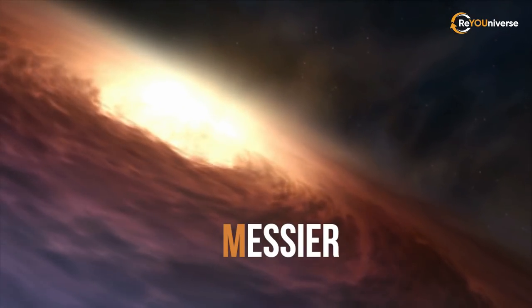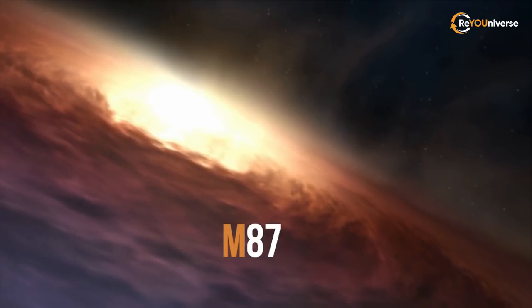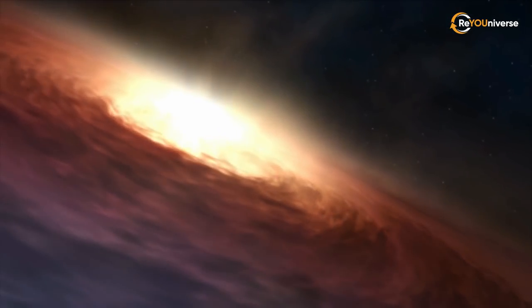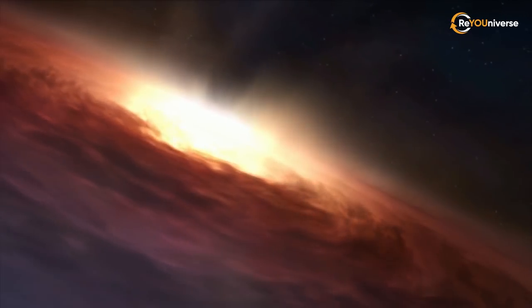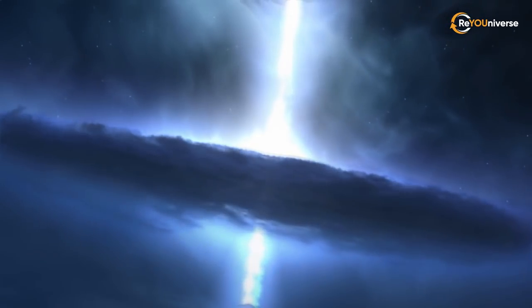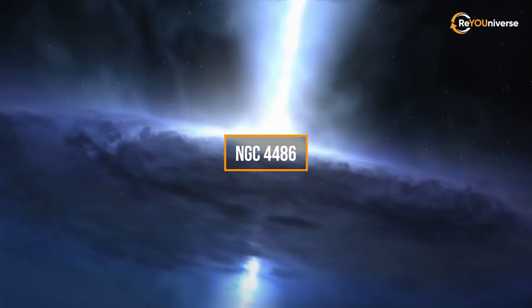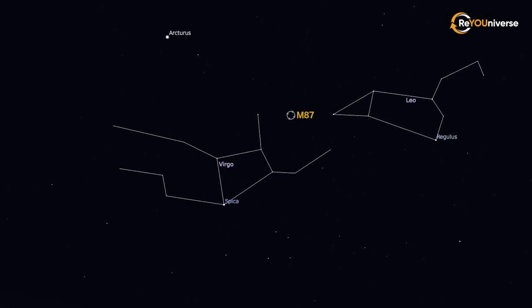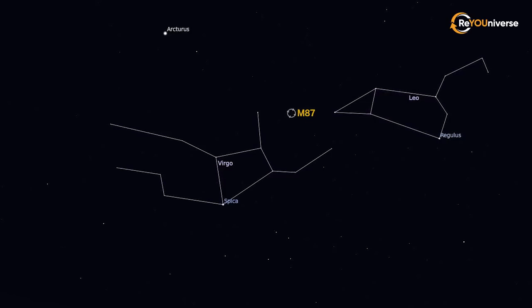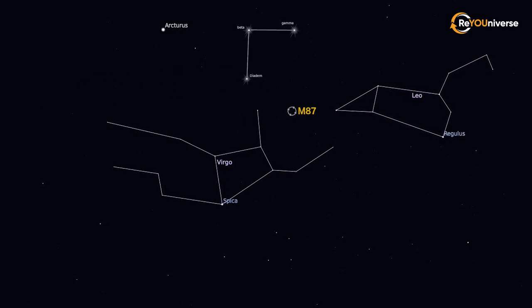The letter M in the name indicates the discoverer's name. According to the New General Catalog's classification, the object is called NGC-4486. The galaxy is observed at the upper border of the constellation Virgo, just below the constellation Coma.